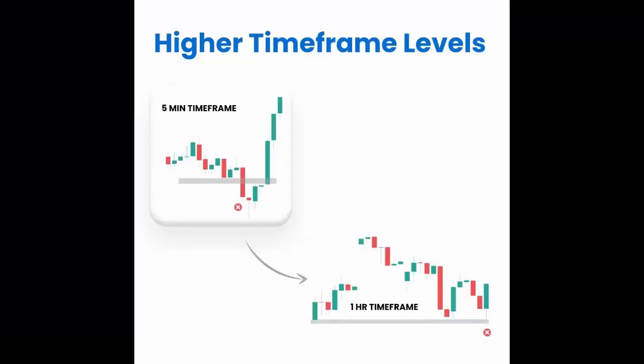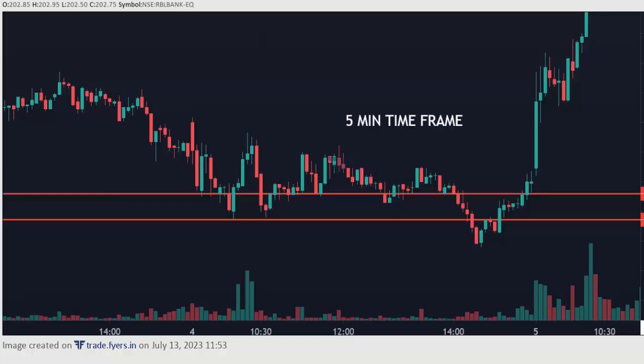Now let's see the last example: higher timeframe levels. Whenever you plan to mark support and resistance levels on a chart, it's better to use a higher timeframe. With smaller timeframes, there is a chance to get more false signals. I will show you one example. This is the RBL Bank five-minute chart. There you can see support is broken and it goes up again.